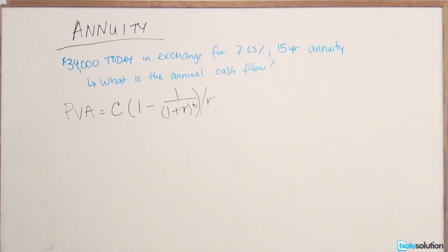PVA equals the cash flow, the annual cash flow, multiplied by 1 minus 1 over (1 plus R) to the power of T, and the entire expression is divided by R. R is your interest rate and T is your time period.